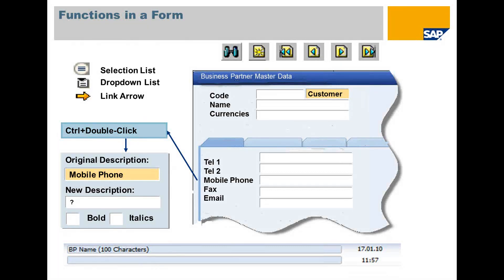The link arrow is a very powerful tool. It allows you to open windows with related information. If a user has the proper authorizations, he or she can change field labels by selecting the Control key and double-clicking the label at the same time.